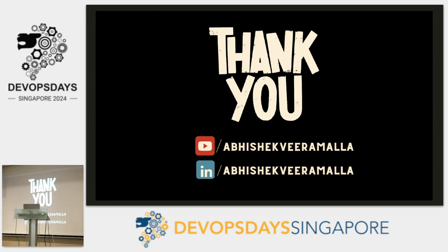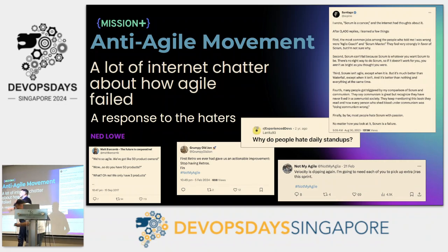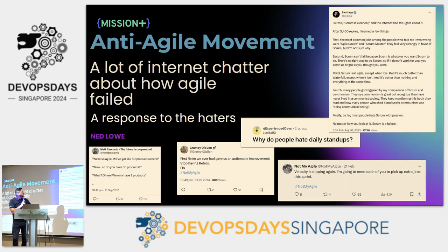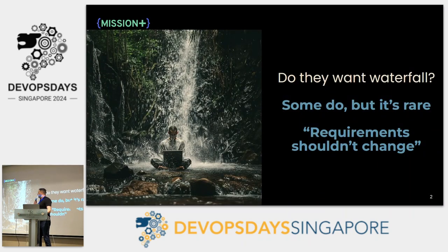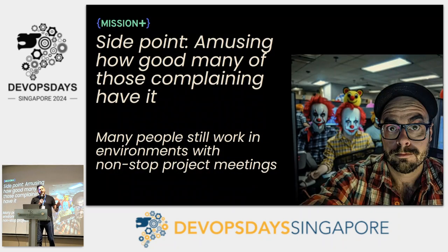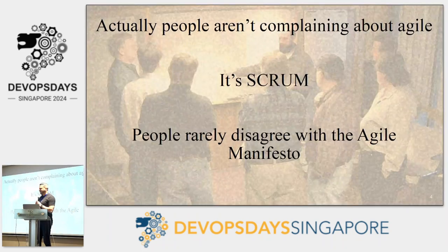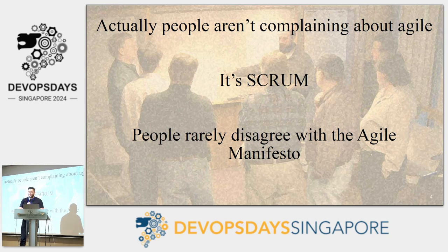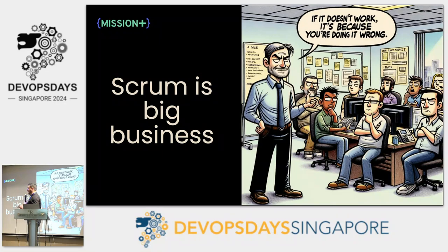If you hang out in the bleeding-edge parts of the internet, you'll find a bit of a backlash against agile recently — people saying scrum is a cancer. Do they want to go back to waterfall? Most don't. Some do — those typically work in areas where requirements shouldn't change, and they might have a point. A lot of these people complaining probably have it pretty good and don't realize that most people sit in fairly awful environments doing project meetings all day. Importantly, they're almost never complaining about agile — almost always they're complaining about scrum. People very rarely disagree with the agile manifesto.